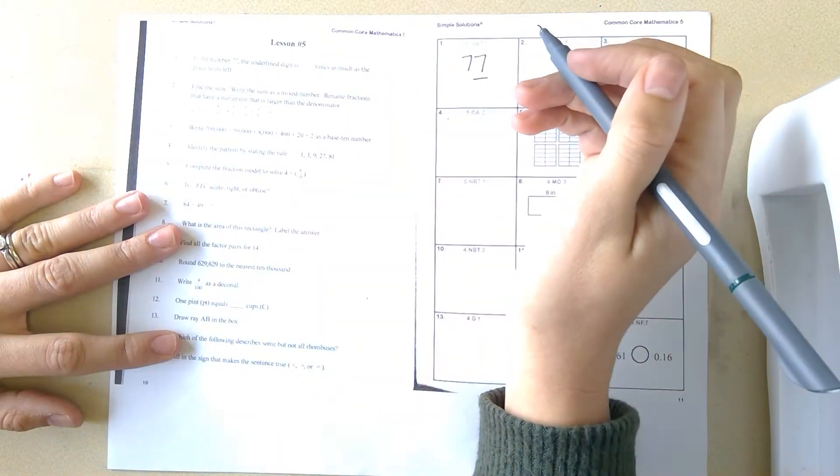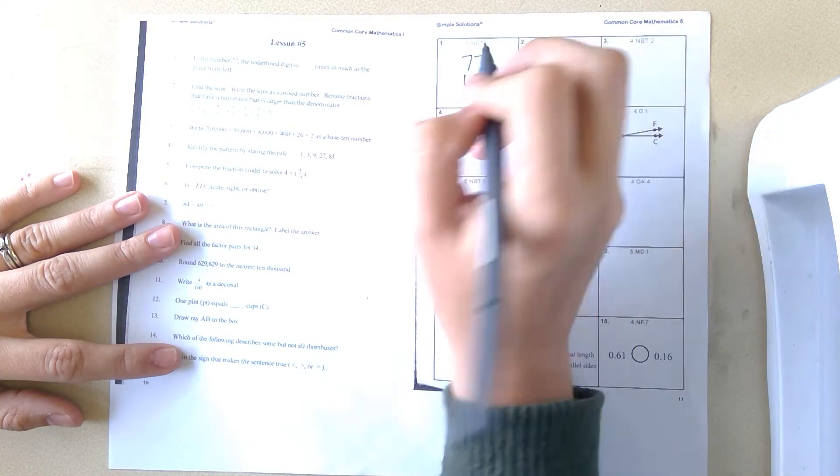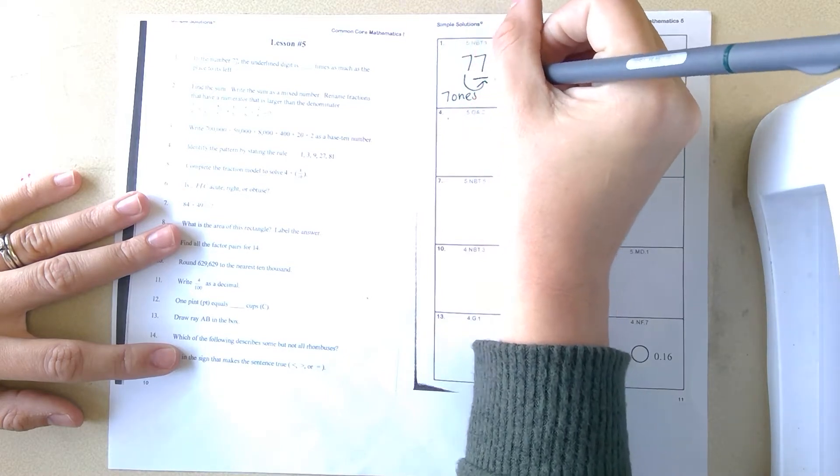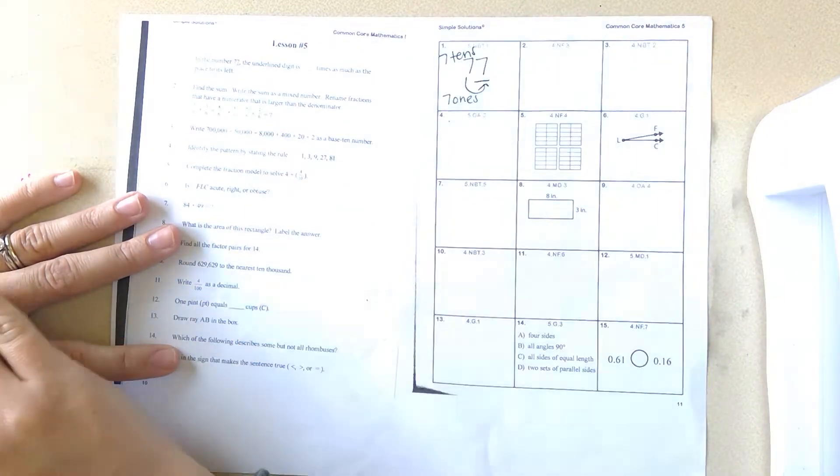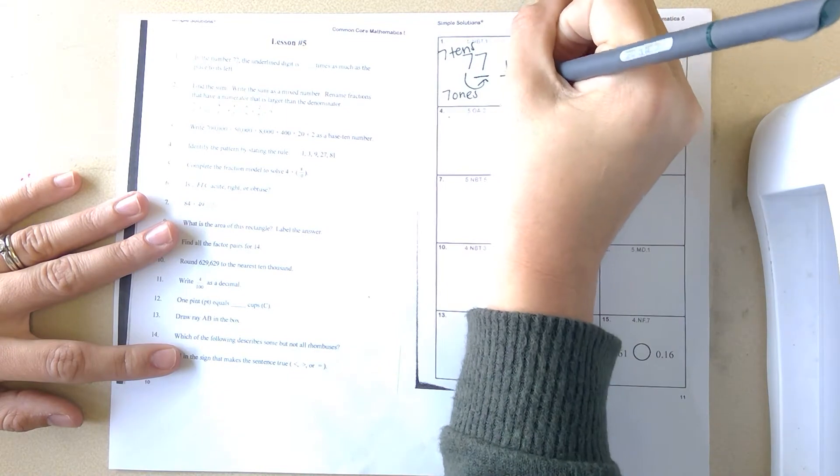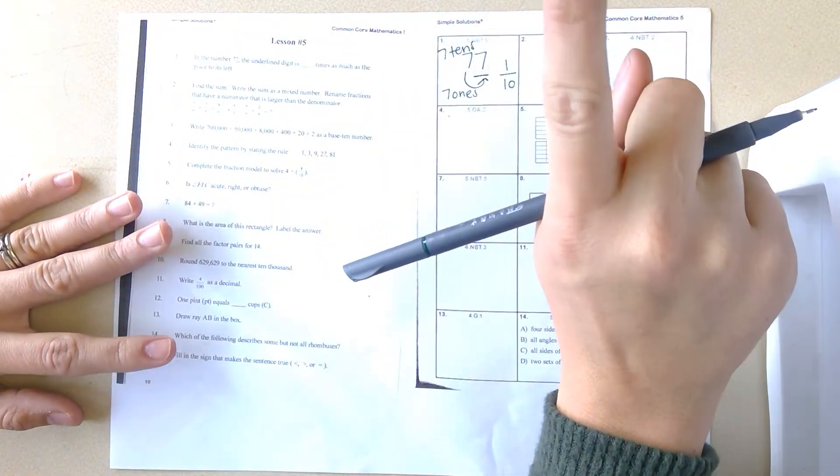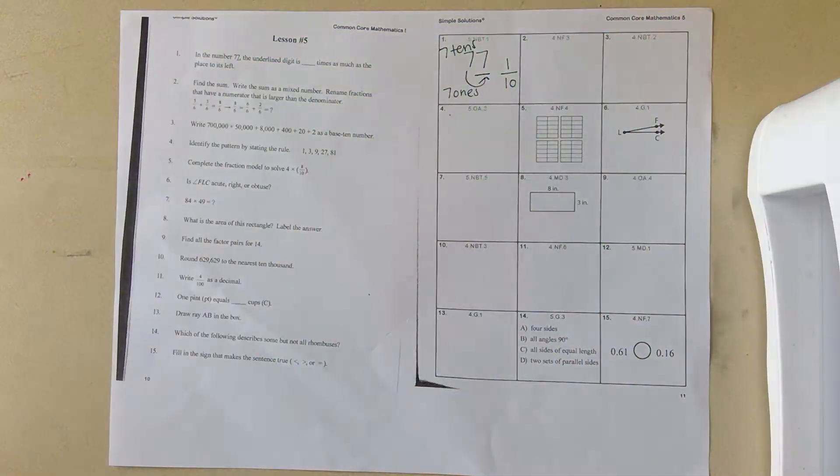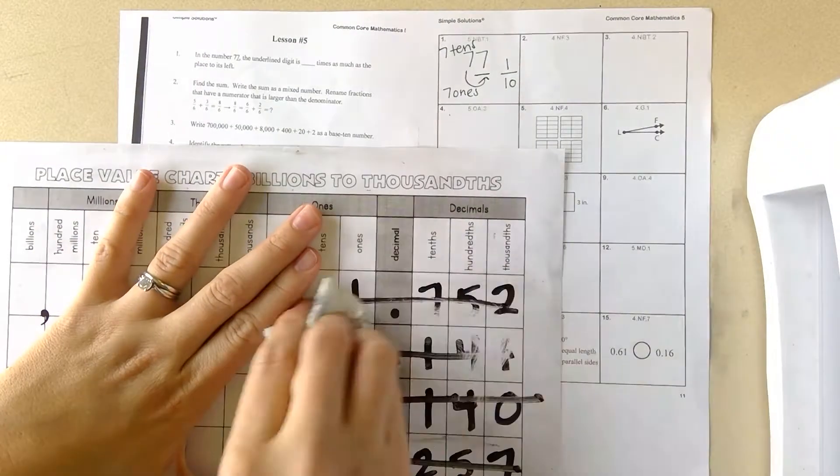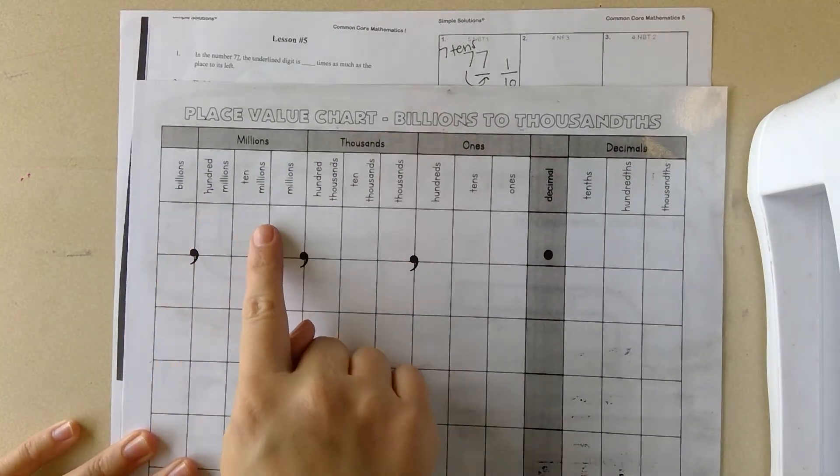It's asking how much larger or smaller is this digit than the digit to the left of it. This is seven ones whereas this is seven tens. The seven in the ones place is one-tenth times as much as the place to its left—it's smaller. As you move to the right on the place value chart, let me show you our place value chart.